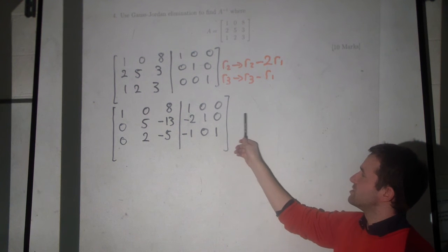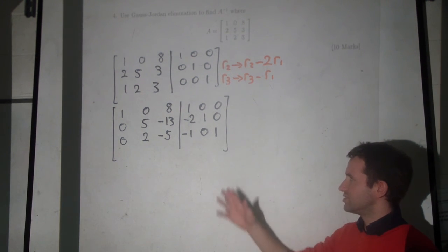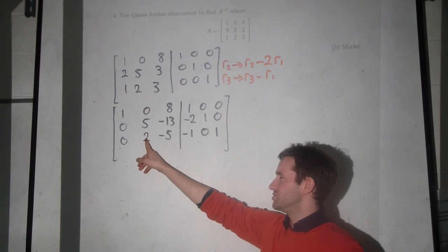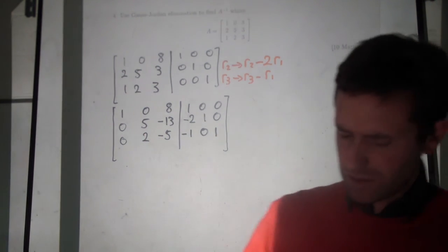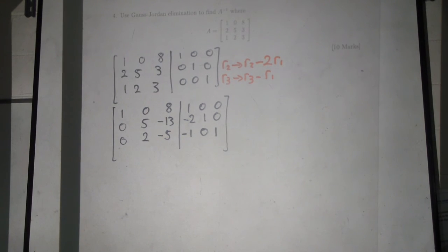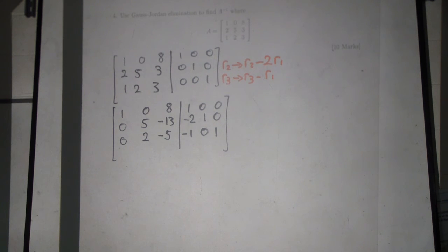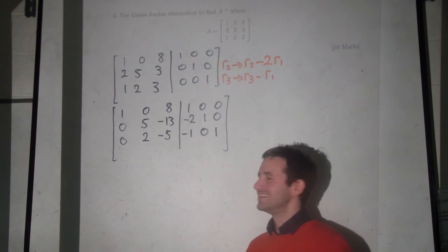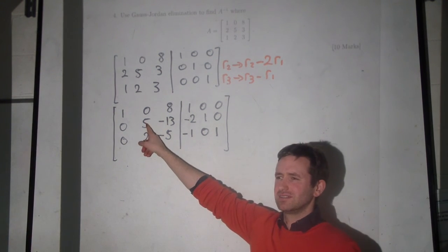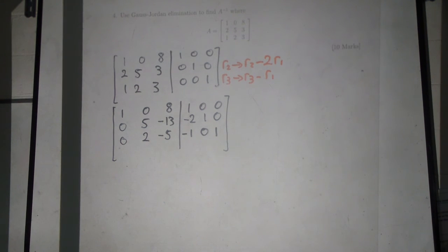It's probably hard to write two row operations in one frame, but it wouldn't be the worst to do one for the 5 turning into 1 and another for the 2 into 0. A student asks: do you always go to the 5 slot first? Yes — you make the 5 a 1 first. There are shortcuts like row 2 minus 2 times row 3, but I'm not recommending them. I recommend you multiply and divide.